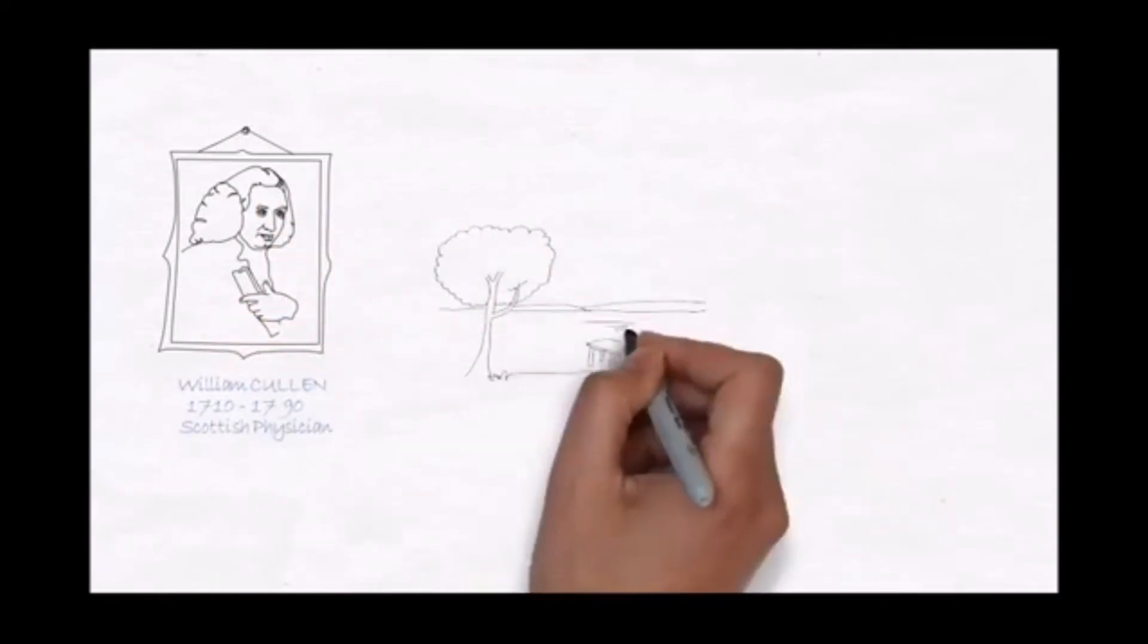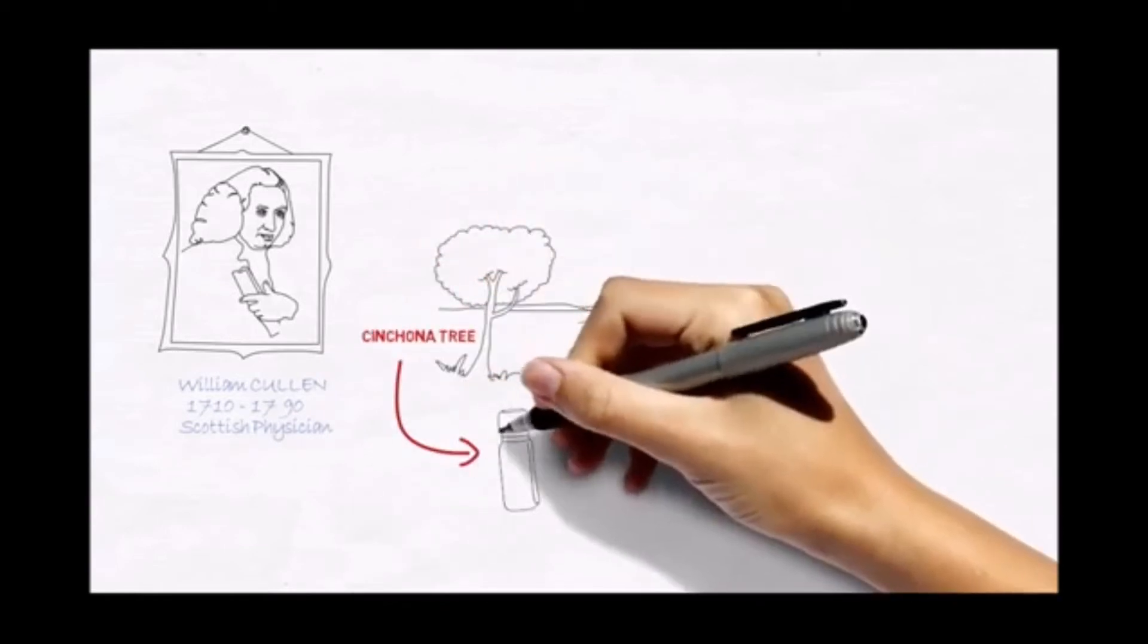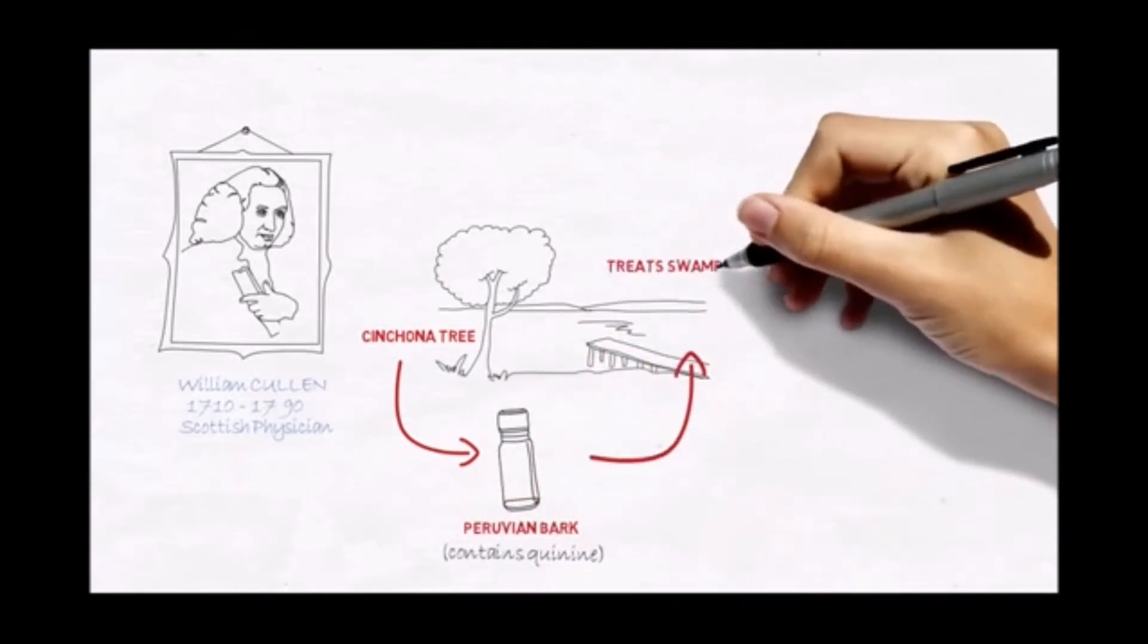Hahnemann found a detailed description of the cinchona tree and a drug called Peruvian bark, which had been successfully used to treat swamp fever, also known as malaria.